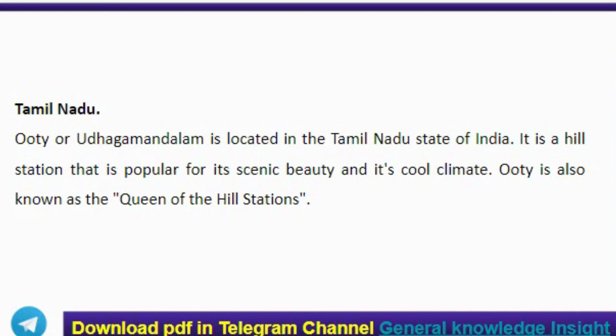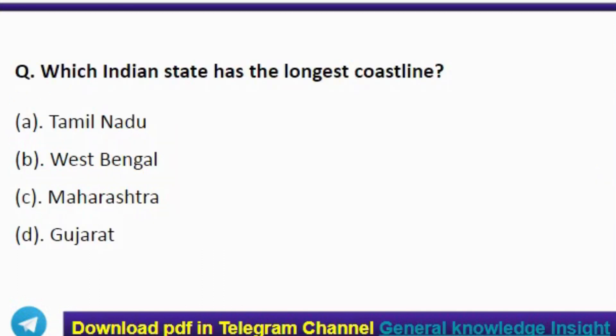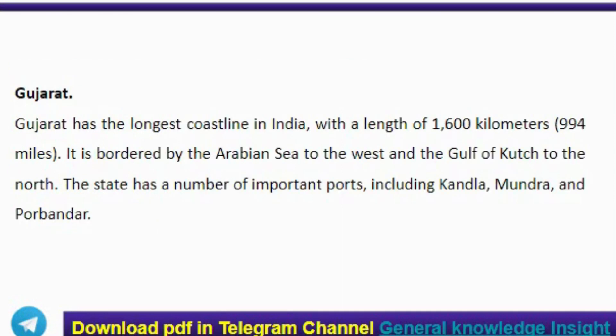Next question: which Indian state has the longest coastline? The correct answer is option D, Gujarat. Gujarat has the longest coastline in India at a length of 1,600 kilometers. It is bordered by the Arabian Sea to the west and the Gulf of Kutch to the north. The state has important ports including Kandla, Mundra, and Porbandar.